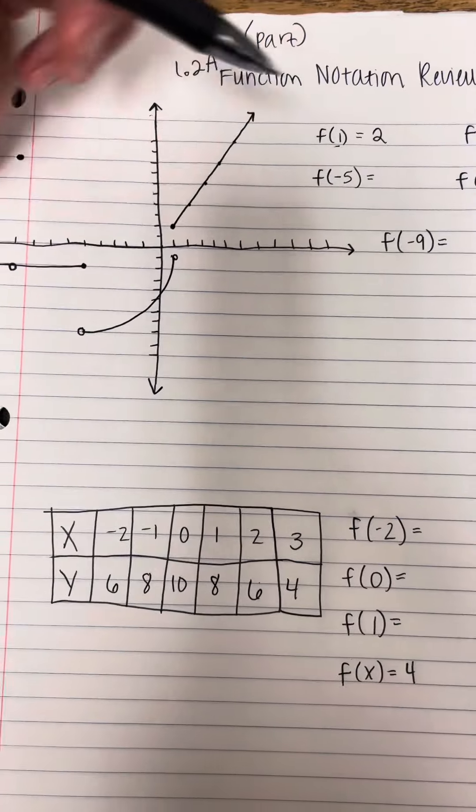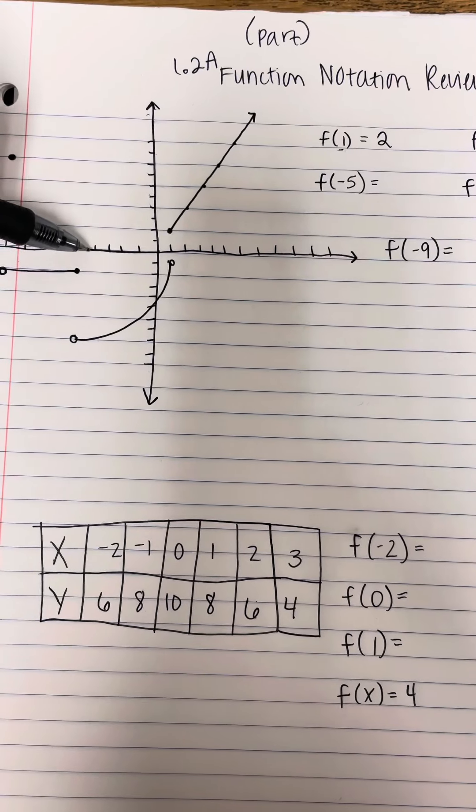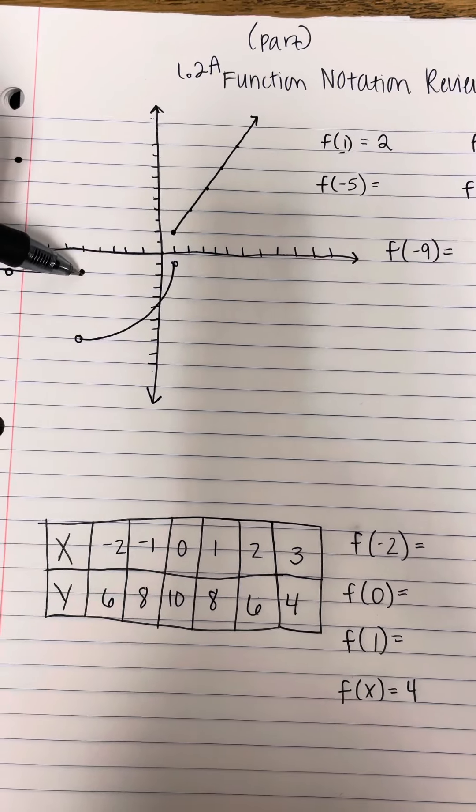When f is negative 5, or when x is negative 5, 1, 2, 3, 4, 5, what is y? That's going to be negative 2.